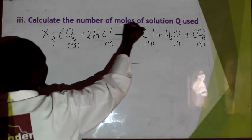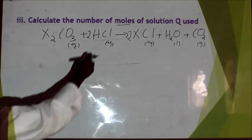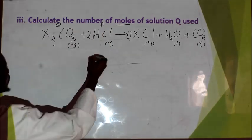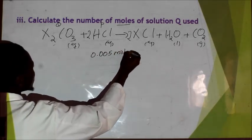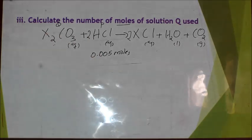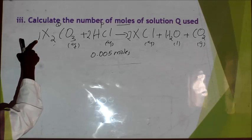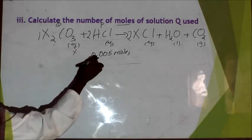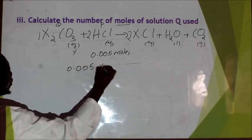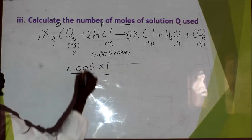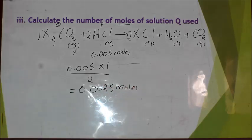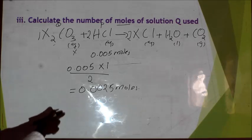So the balanced equation is: X₂CO₃ + 2HCl → 2XCl + H₂O + CO₂. Now, how does this equation help us get the moles of solution Q? You had already calculated the moles of solution P as 0.005 moles. Using the mole ratios from the equation — 1 mole of Q requires 2 moles of P — so 0.005 moles of P requires 0.005 × 1 ÷ 2 moles of Q.